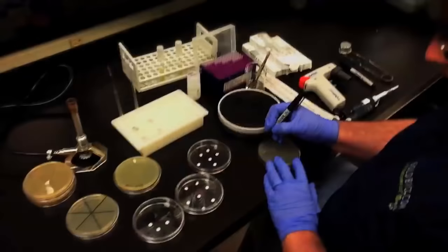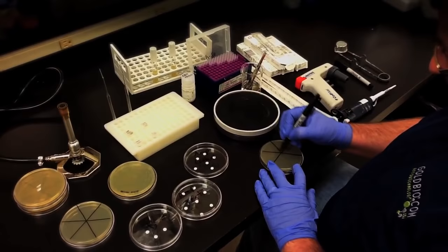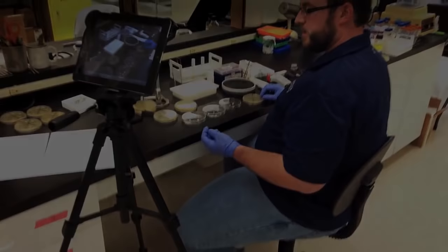Label your agar plates in a way that sections off each test disc so you can differentiate them after incubation. I use six sections because I use a blank disc, two control discs, and three discs for the antibiotic I'm testing in order to make sure that I get a better estimate of the antibiotics functionality.